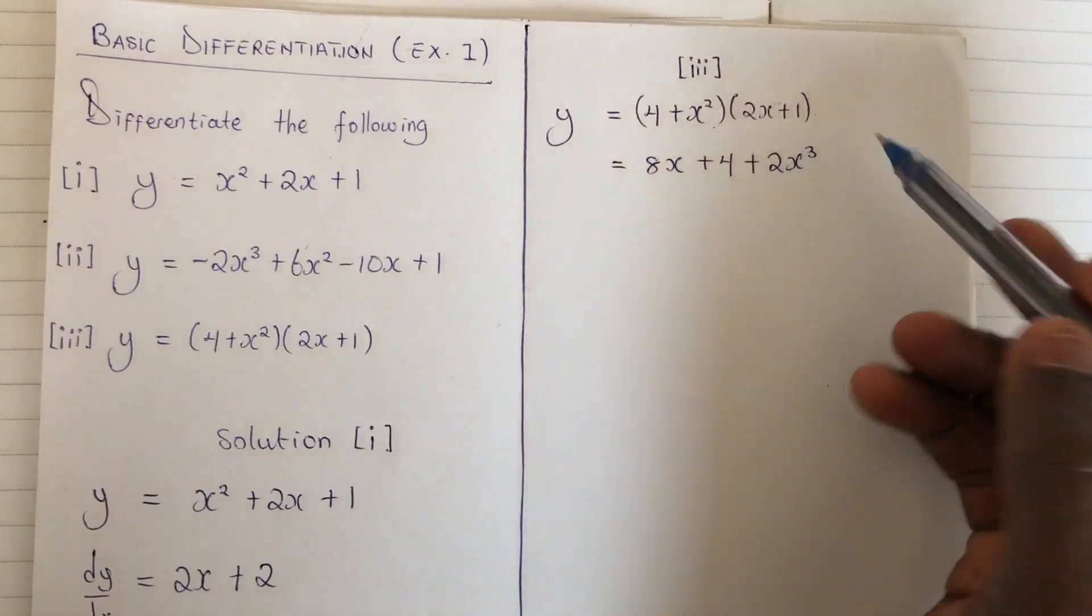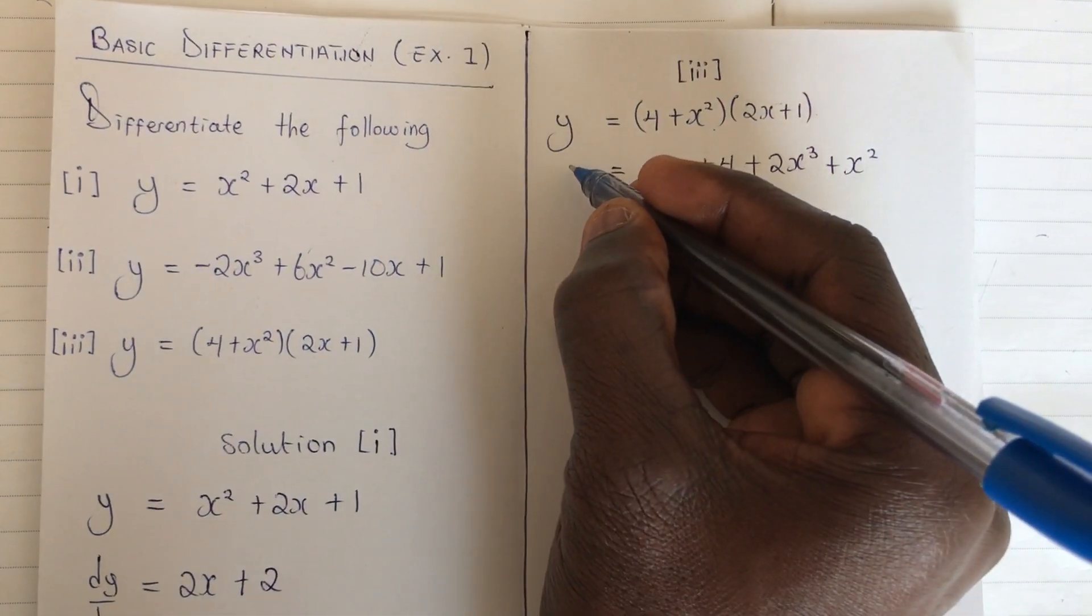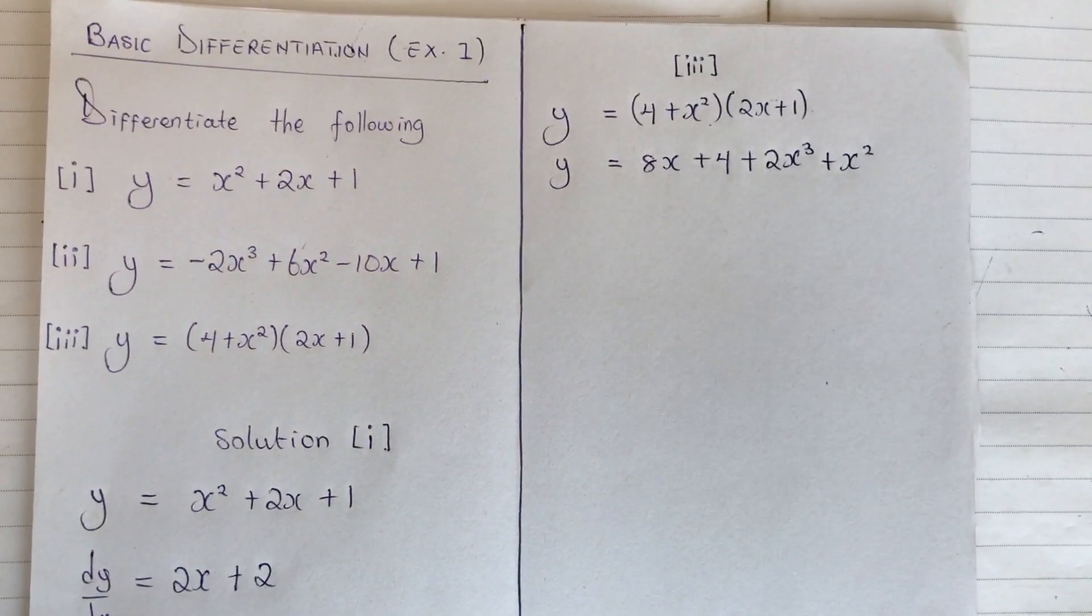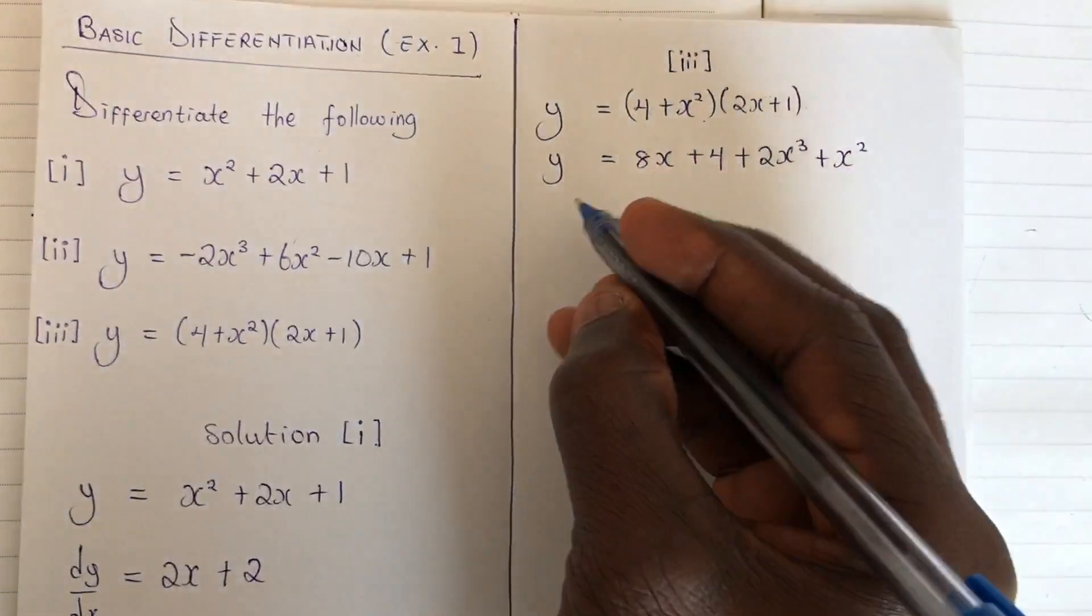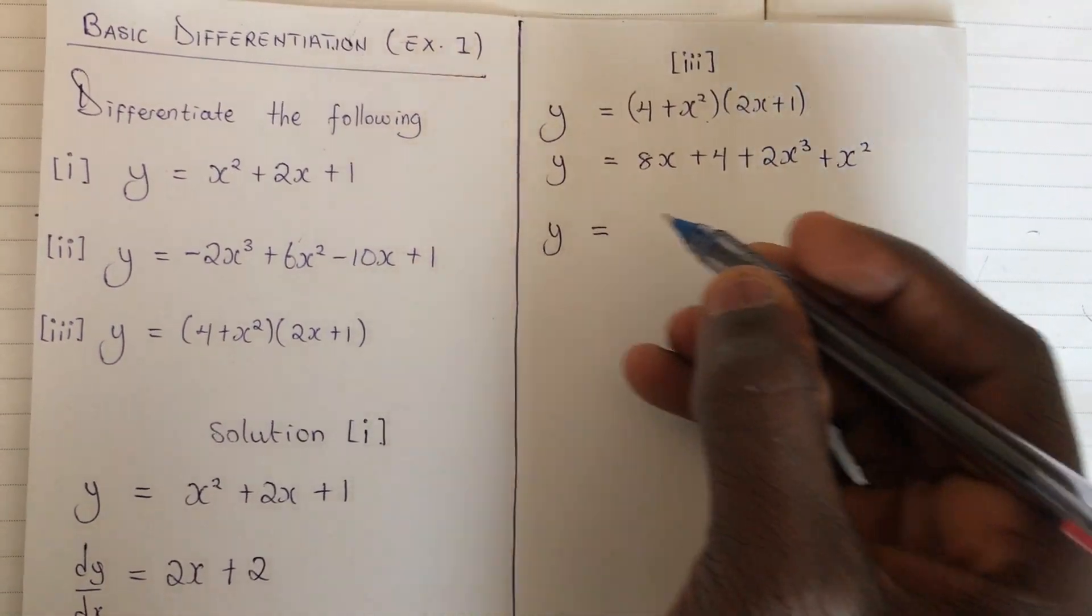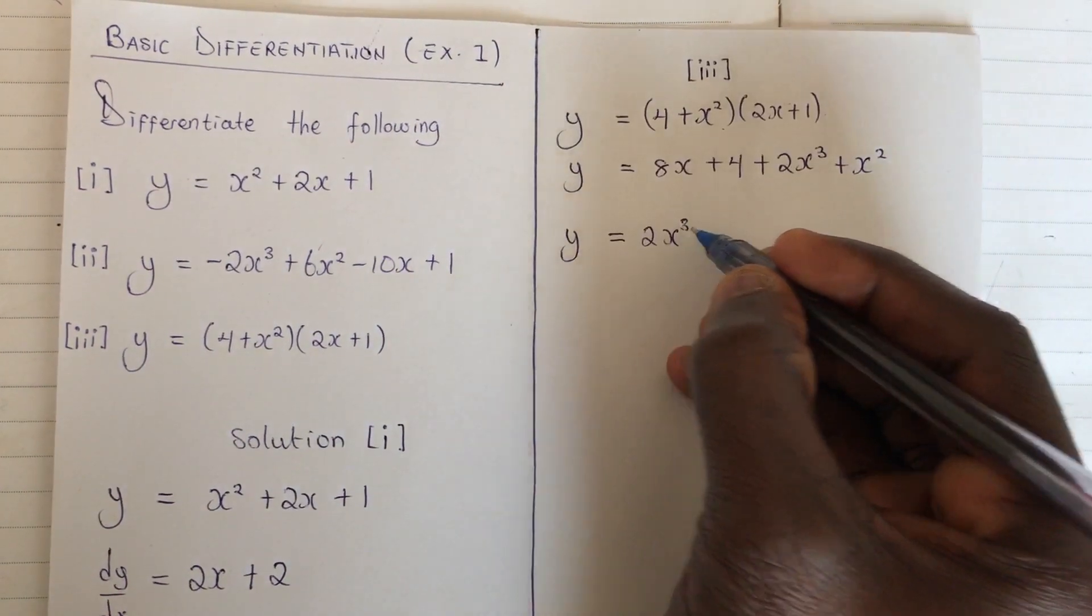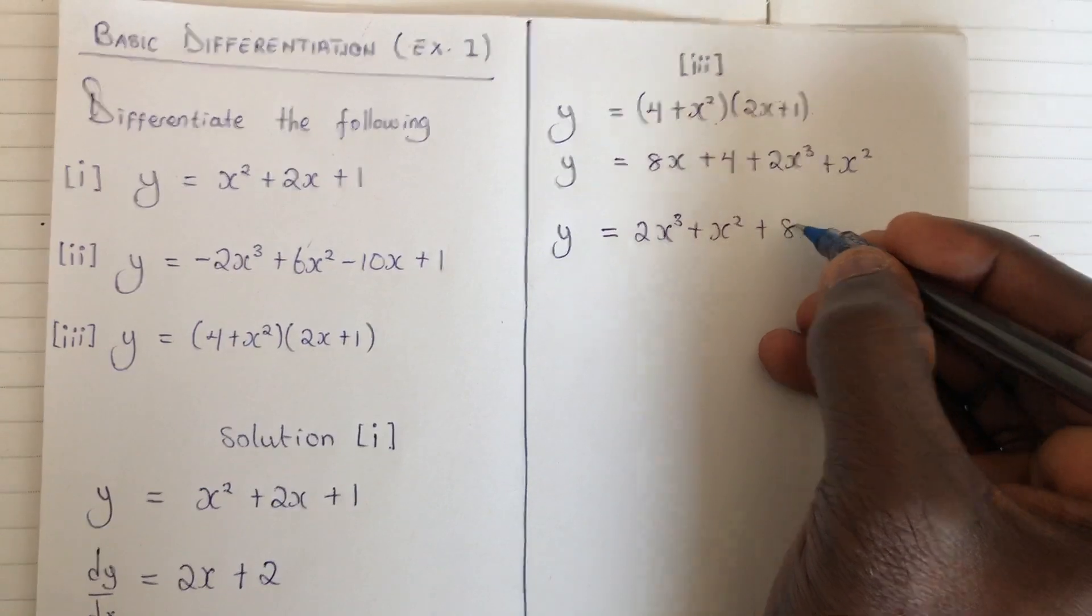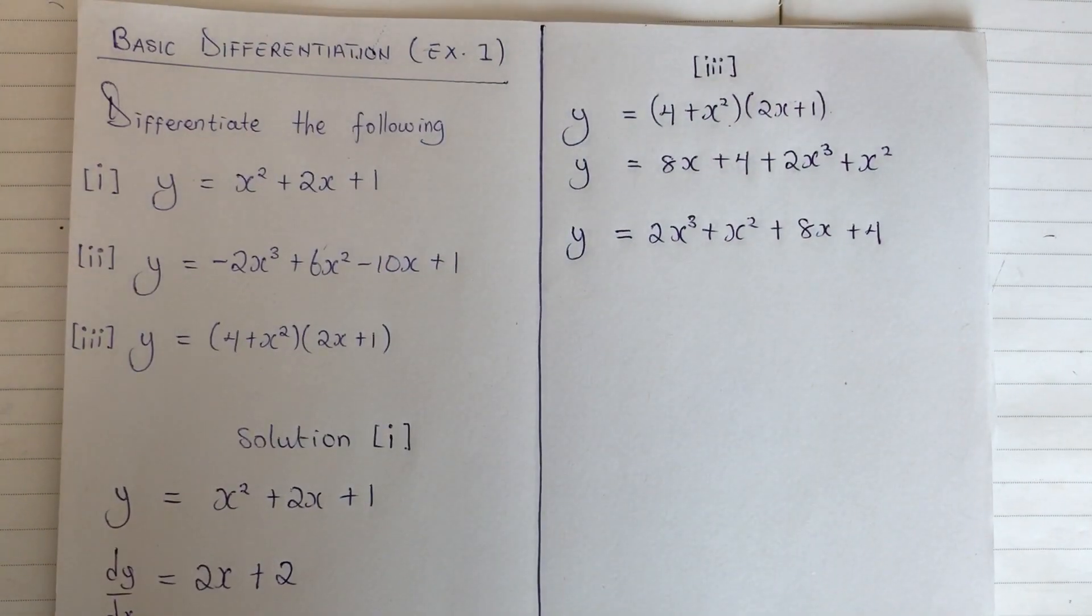Then x squared times 1, we are getting plus x squared. And this is y. Now arrange the equation in descending order from the highest power to the least. So my y will be equal to, I'll start with this one: 2x to power 3 plus x squared plus 8x, then finally plus 4. And this is it.